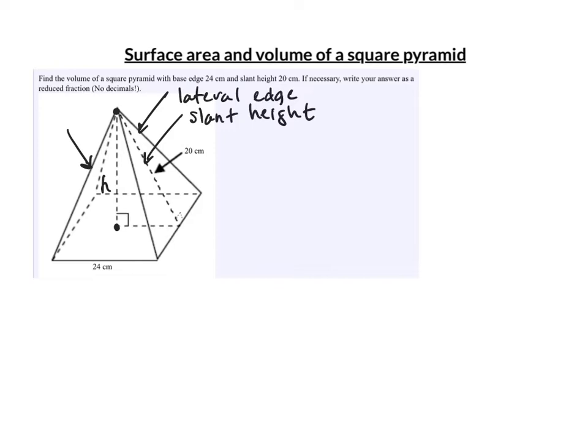The lateral area consists of the four triangular faces. If we add the base, that gives the total surface area. We don't need any new formulas to find the surface area of a pyramid, but we will need a new formula for the volume, which we'll get to shortly.